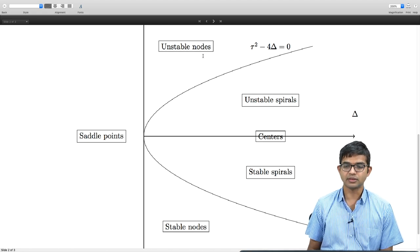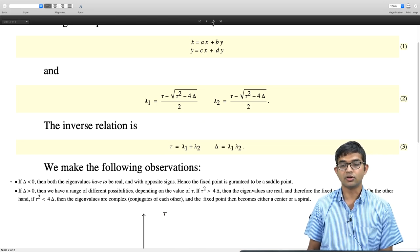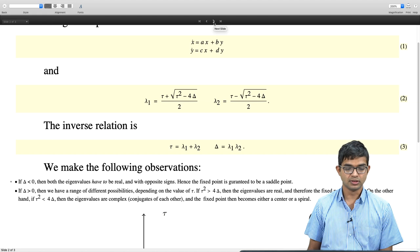And also you can have stable and unstable spirals, you can also have these borderline cases. Borderline cases are where you should be careful if you are doing linearization of a non-linear problem. We have seen all of this.